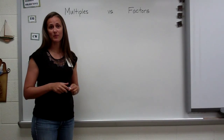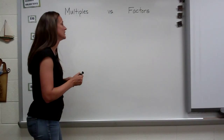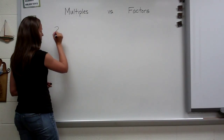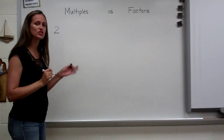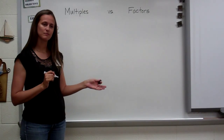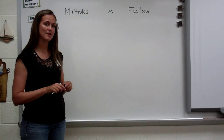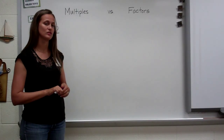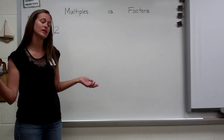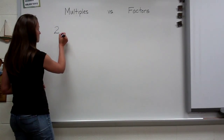It's basically what we call elementary skip counting. For example, if I have the number two, it would be as if I took two and multiplied it by one the first time, then took two and multiplied it by two the next time, and so on and so forth. You don't have to stop.